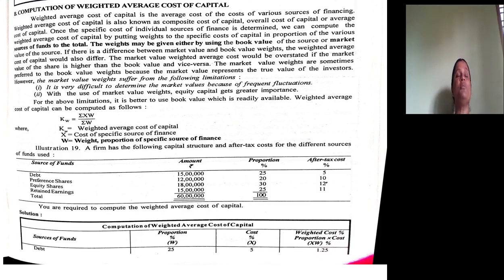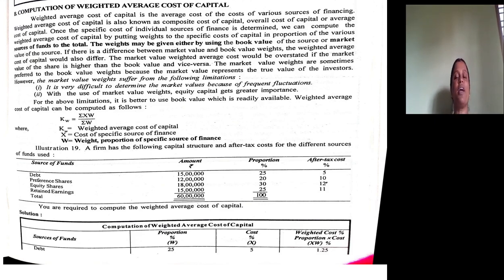So far we solved problems on specific cost of capital. From this session onwards, we are concentrating on the average cost of all sources — we are calculating average cost by putting all sources of financing together, which constitutes the weighted average cost of capital. It is also called composite cost of capital, overall cost of capital, and average cost of capital. Once we calculate the cost of each individual source, we then calculate the weighted average cost of capital.